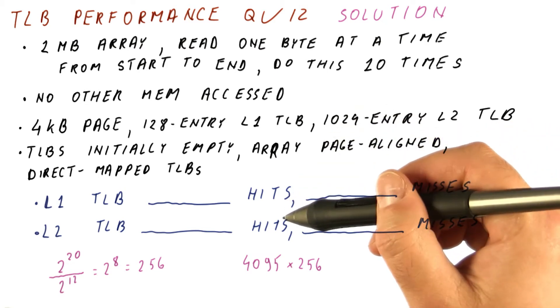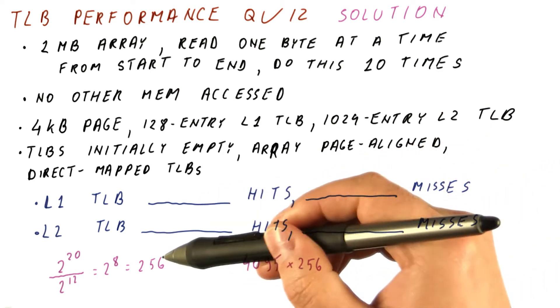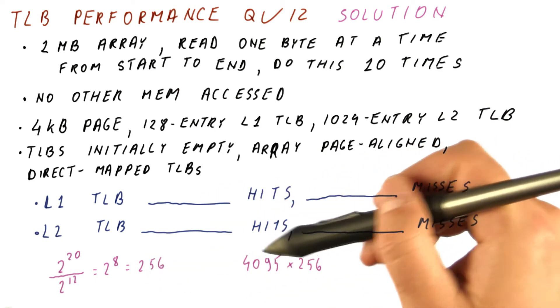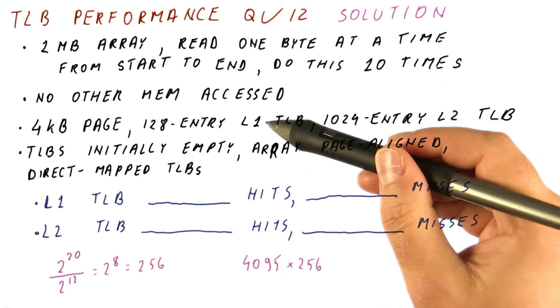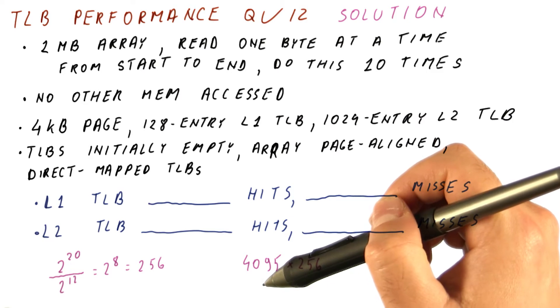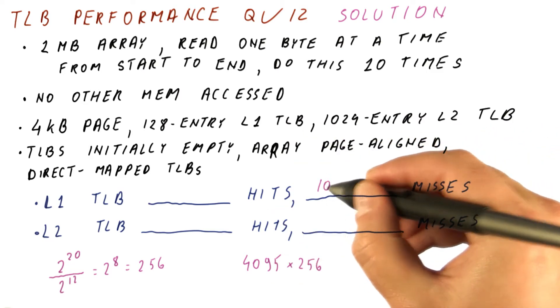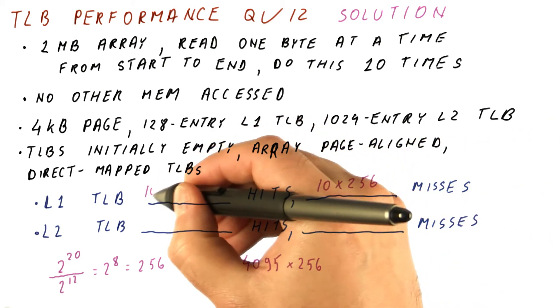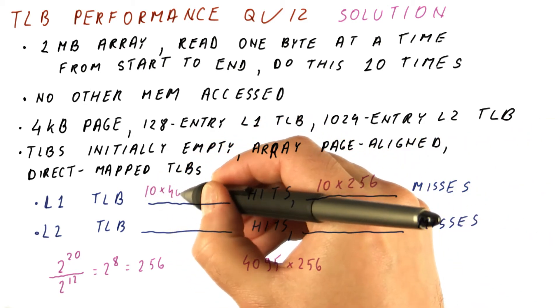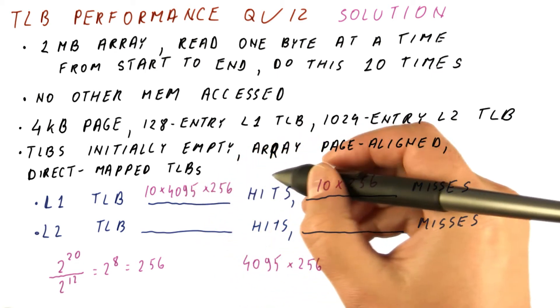So what's going to happen after the first sweep is the level one TLB will continue doing this: 256 misses and this many hits each time we sweep. But the level two TLB will start hitting all the time. So what we have is 10 times 256 misses here, and 10 times 4095 times 256 hits here.